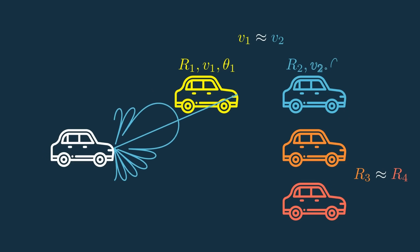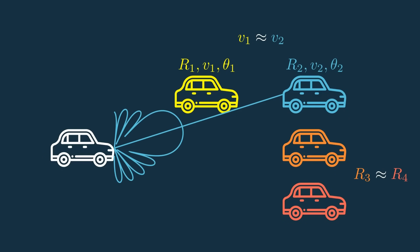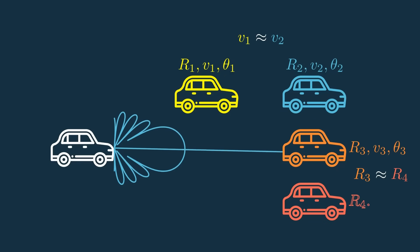A radar must figure out not just how far each car is, but also which lane it's in, and how fast it's moving.